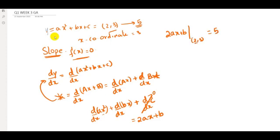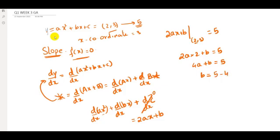Substituting x = 2: 2a(2) + b = 5, so 4a + b = 5, which gives b = 5 − 4a. Now we know that for a parabola the x-coordinate of the vertex is given by the formula −b/(2a). The x-coordinate here is 3, so −b/(2a) = 3, which gives b = −6a.